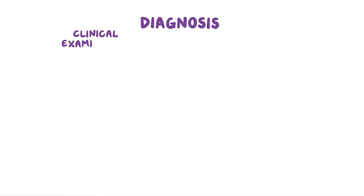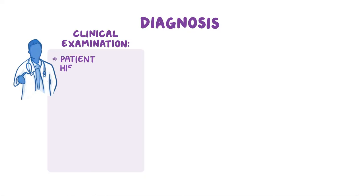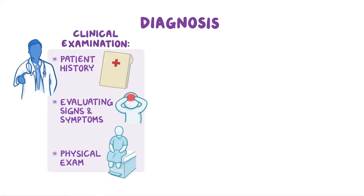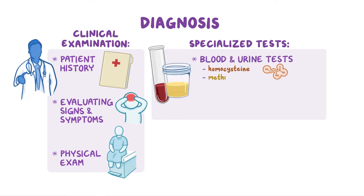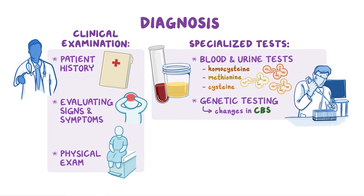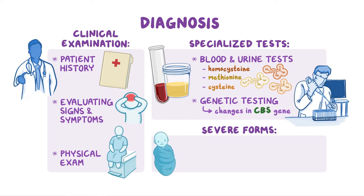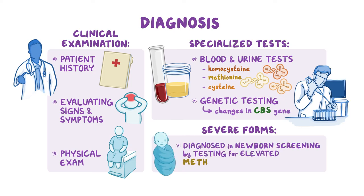Classical homocystinuria is diagnosed through a clinical examination, which includes taking a patient history, evaluating signs and symptoms, and a physical exam. If homocystinuria is suspected, a variety of specialized tests will be conducted, including blood and urine tests for homocysteine, methionine, and cysteine levels, and genetic testing for changes in the CBS gene. More severe forms can be diagnosed in a newborn screening by testing for elevated methionine levels.